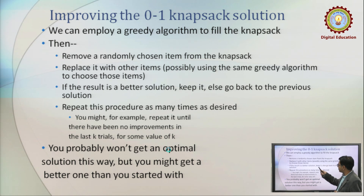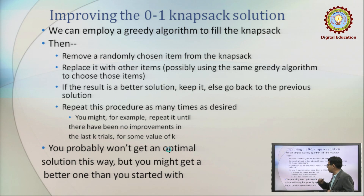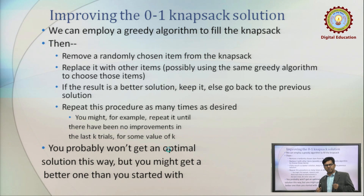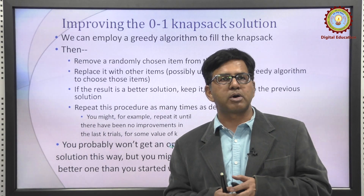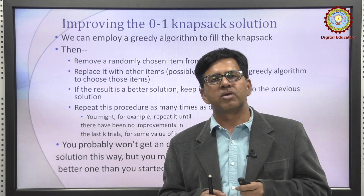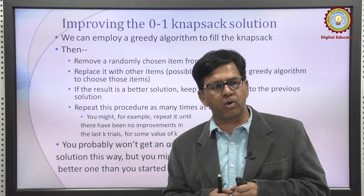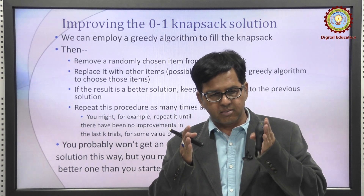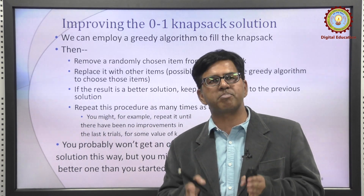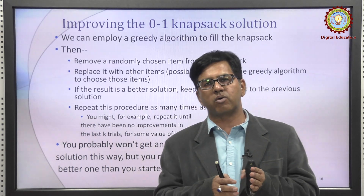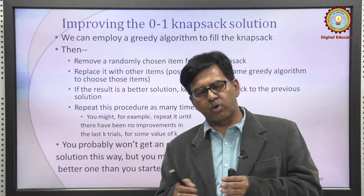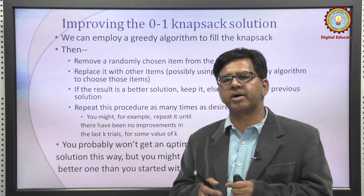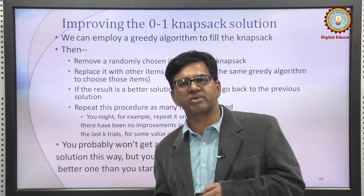Remove a randomly chosen item from the knapsack, replace it with other items. If the result is a better solution, keep it; otherwise go back to the previous solution. Repeat this procedure as many times as desired. The question arises: how many times should we keep doing this procedure? We cannot go on for infinite time. So we observe — say after 10,000 trials, we observe this is the maximum profitable sequence of items from the last 10,000 iterations. We can stop there with the hope that we got the best solution.